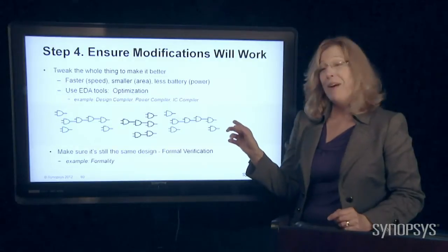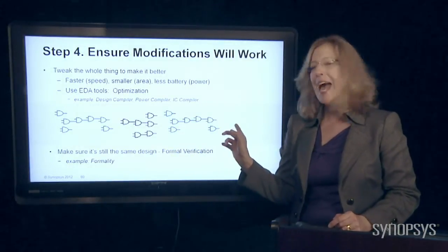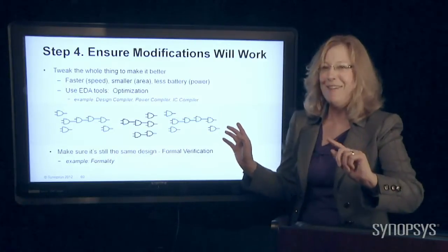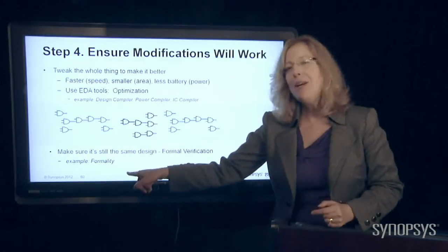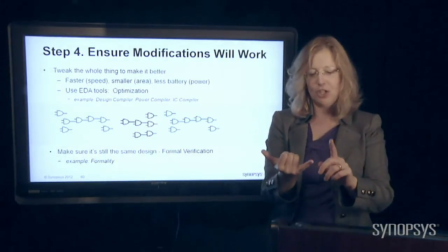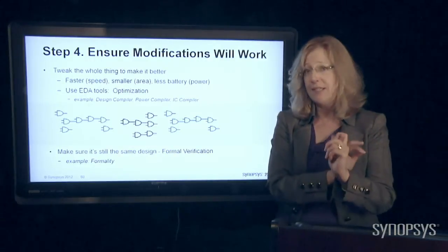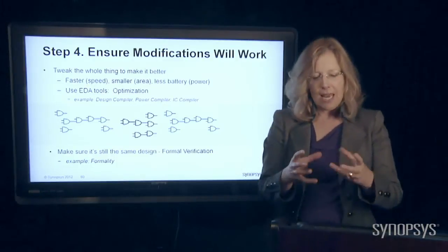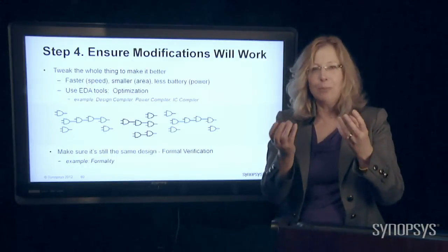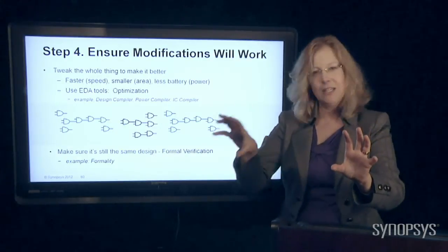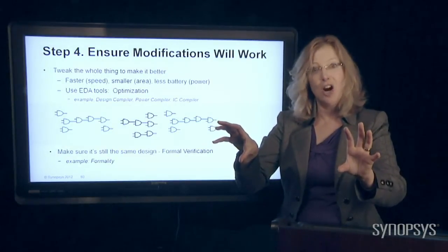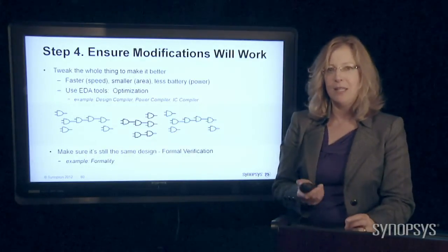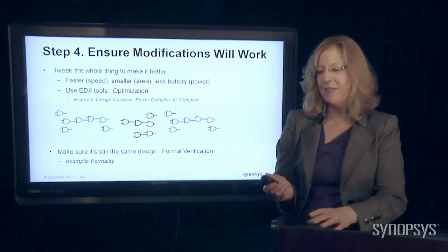Once you've done optimization, however, you've changed the design. So you really want to check one more time, because your design has changed, to make sure it's exactly the same function and exactly the same timing as before. This step is called formal verification because it uses amazing mathematical proofs to say: I'm looking at this design and looking at the other one — and they are the same. It's a very advanced kind of step, but a very important one in the design process. Our tool for this is called Formality, which is a pretty nice name.